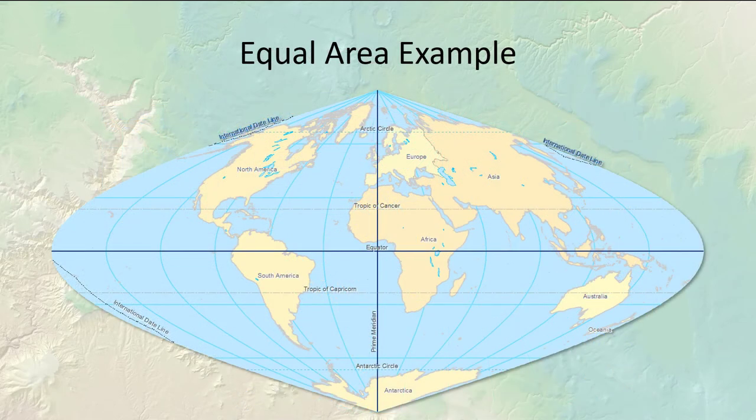Equal area maps, on the other hand, can have shapes that are way twisted and warped, but the area within each polygon is correct. This particular example is called the sinusoidal projection, which is one of the more famous equal area projections. Sinusoidal is called a pseudo-cylindrical projection, meaning it's a mathematical construction similar to a cylindrical projection.